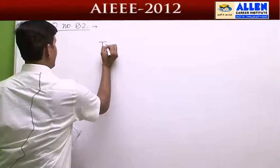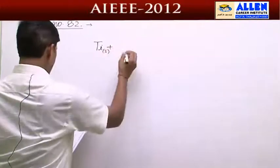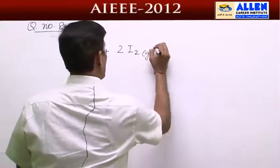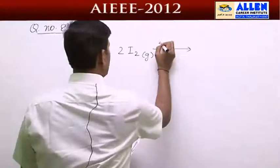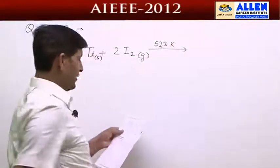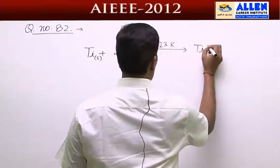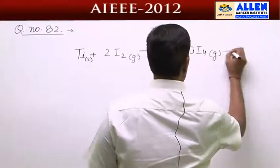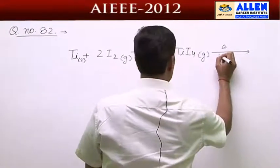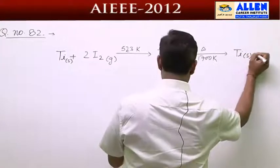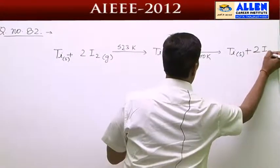Looking at this question: solid state titanium plus 2I2 iodine in gaseous phase forms a volatile compound titanium triiodide on heating at 523 Kelvin. On strong heating again at 1700 Kelvin, it decomposes back to titanium solid plus 2I2 iodine.